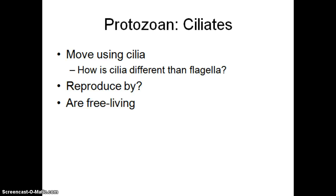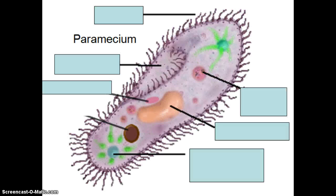Ciliates are another animal-like protist that move by cilia. They reproduce asexually, and occasionally they can do conjugation, which is a form of sexual reproduction. They are also free-living. I have a picture here very similar to one in your textbook. Look at figure 20.13 on page 379, draw out a paramecium in your notes, label the parts, and know what each one does — you may need to refer to the text for that.